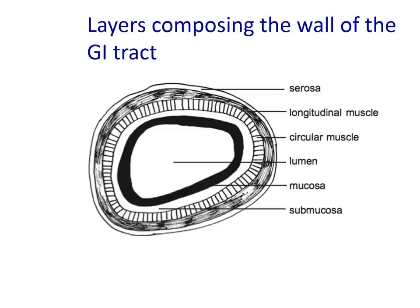The layer underneath the mucosa is the submucosa, composed of loose connective tissues and carrying numerous blood vessels which perfuse the gut wall. In certain areas of the GI tract, the submucosa contains exocrine glands which produce some of the digestive enzymes. Areas of lymphatic tissue — called lymphatic nodules — provide an immunological function. This layer also contains a network of intrinsic nerve fibers collectively called the submucosal plexus; 'plexus' meaning a network of blood vessels or nerve fibers.